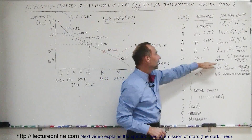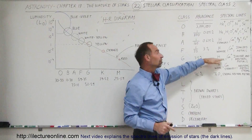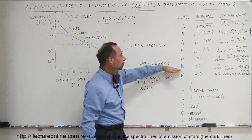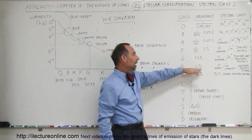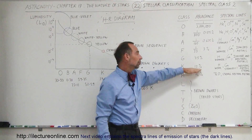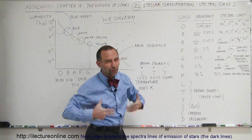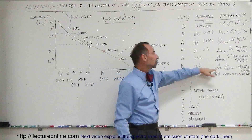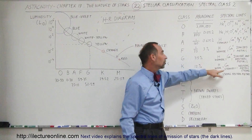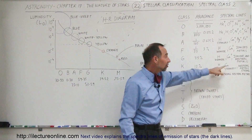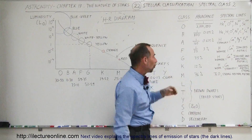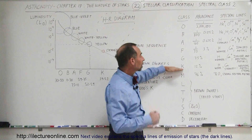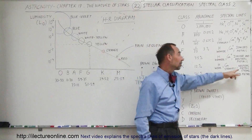Hydrogen lines are weaker in G-class than in F-class stars. Moving to the next class — the K-class — about 1 in 8 of all stars, at least in our neighborhood, are K-class stars. Hydrogen lines are weaker still, and the calcium lines are the strongest we've seen. When we see very strong calcium lines in the spectrum, we know we're looking at a K-class star.